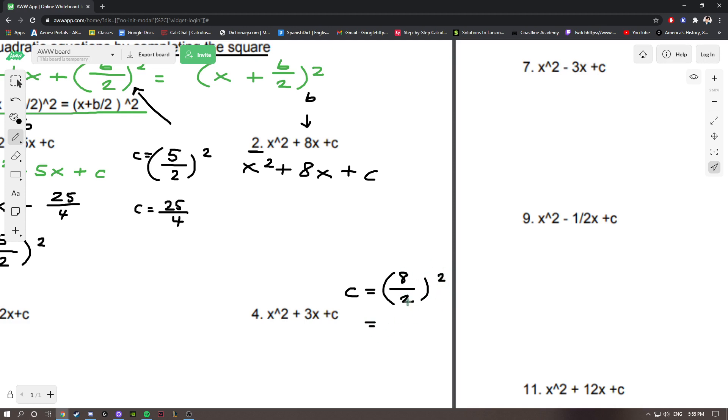And, instead of squaring top and bottom, we could simplify what's in the parentheses first, which is, 8 divided by 2 is 4. And then we can square it, which is 16. c is equal to 16. So, we have x squared plus 8x plus 16. And, that is the same thing as x plus 4, the quantity squared.